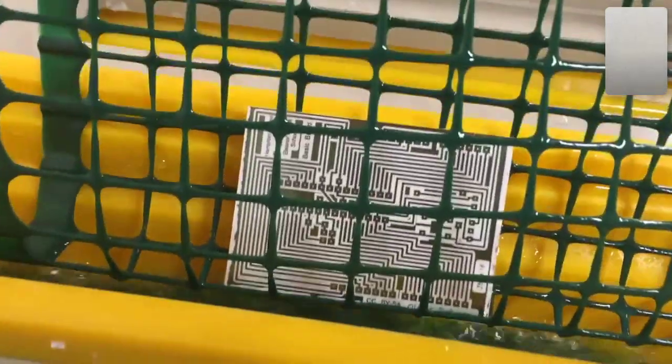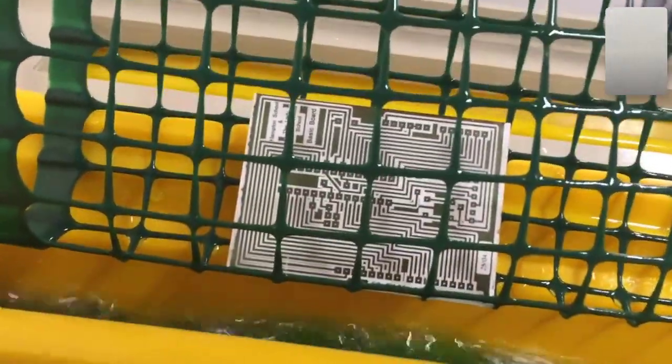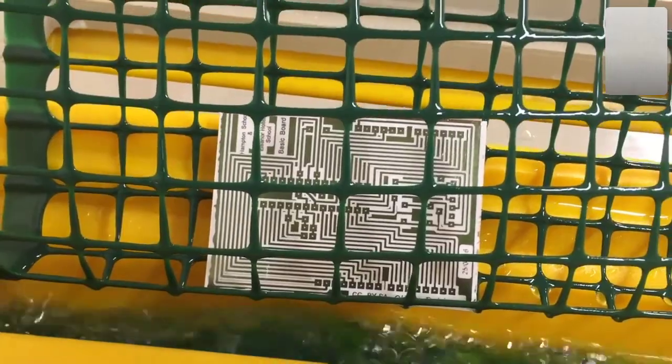Once your timer goes off, take it out and have a quick look at it. Try to make sure that all of the copper that's meant to be gone is gone. If it isn't quite there, put it back in for another couple of minutes.